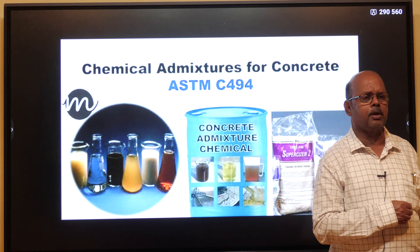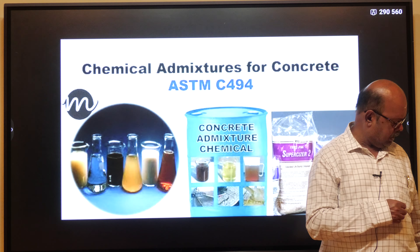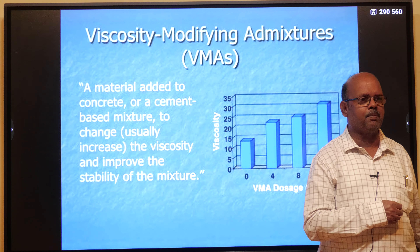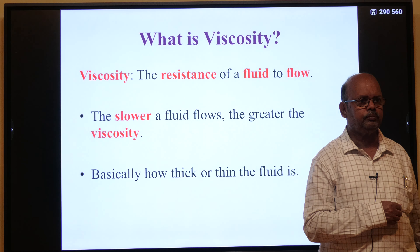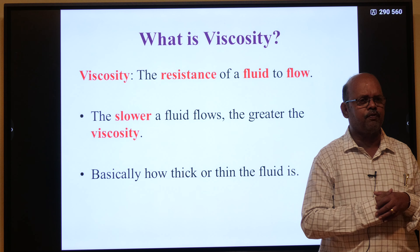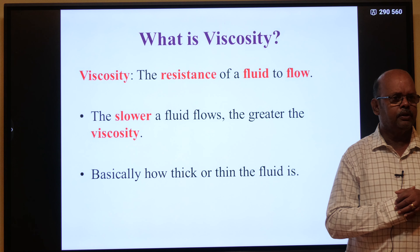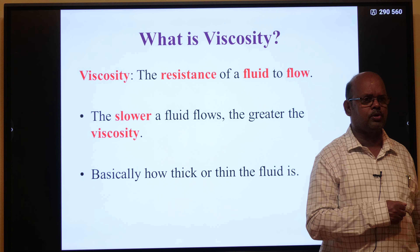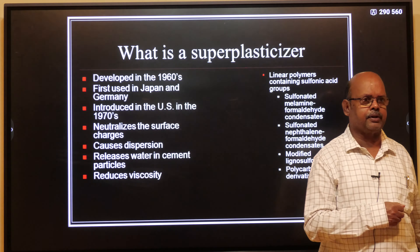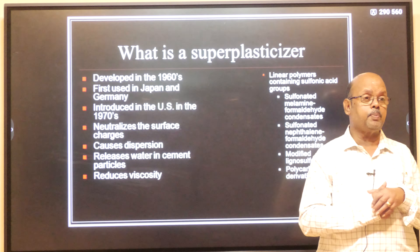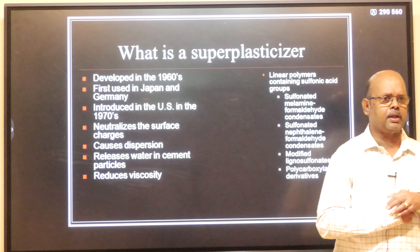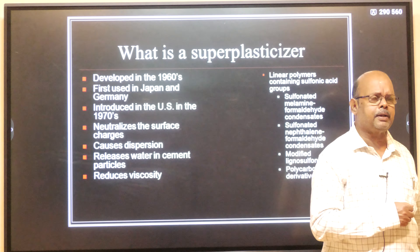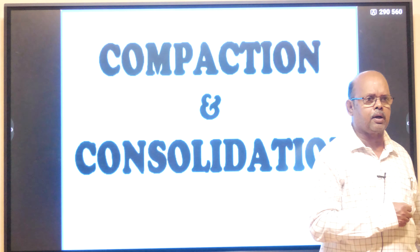Chemical admixtures are added to concrete to reduce water and improve viscosity. This is called viscosity modifying admixture (VMA). Viscosity is the resistance of a fluid to flow — the slower a fluid flows, the greater its viscosity. VMA is used for modern special concrete. Super plasticizer is used along with VMA to reduce water, and it is very common in making special concrete.